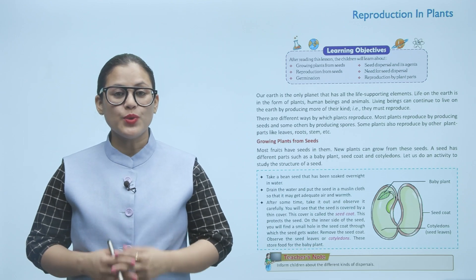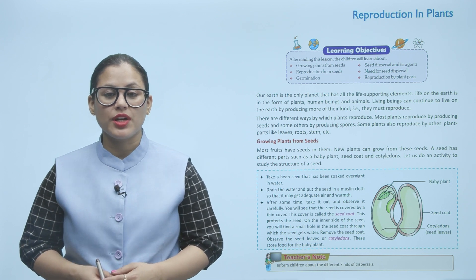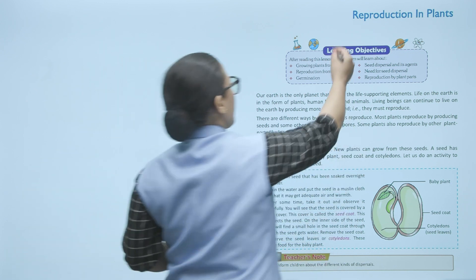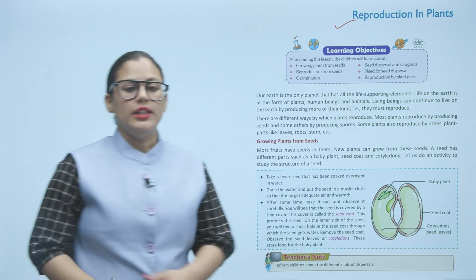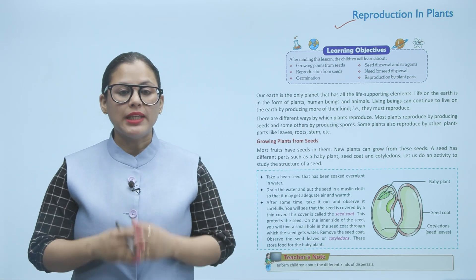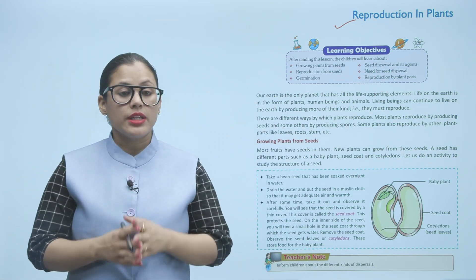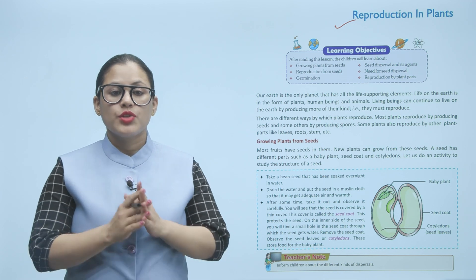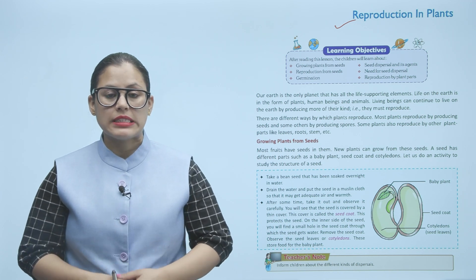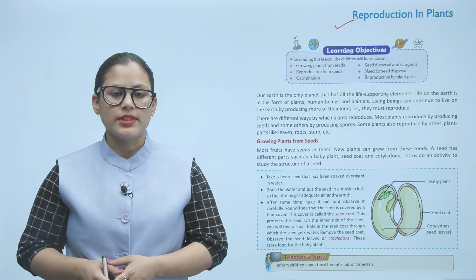Hello children, hope you're all doing good. Let's start today's chapter, reproduction in plants. Learning objectives: growing plants from seeds, reproduction from seeds, germination, seed dispersal and its agents, need for seed dispersal.